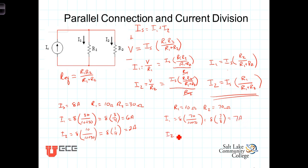And I2 is going to equal 8 times R1 in the numerator, which is 10 over 10 plus 70. That's equal to 8 times 1 eighth.